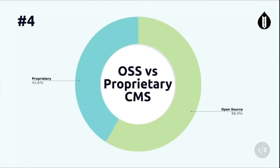Breaking the CMS landscape down by open source versus proprietary: if you could download the source code and run it yourself, with a license indicating you could modify it, I count that as open source. If you had to pay someone money or there's a big 'contact sales' link on your website, I count that as proprietary. The cool thing is 58% of all CMSs identified were open source.